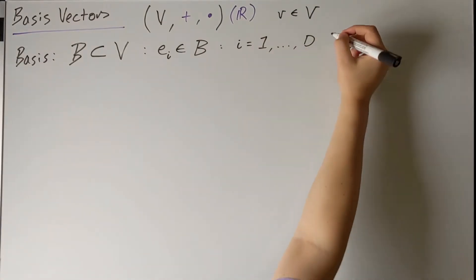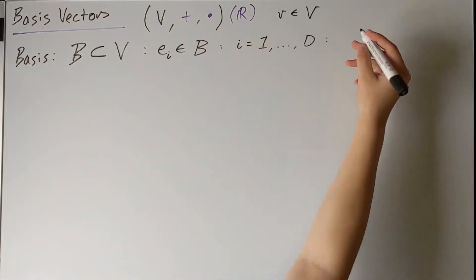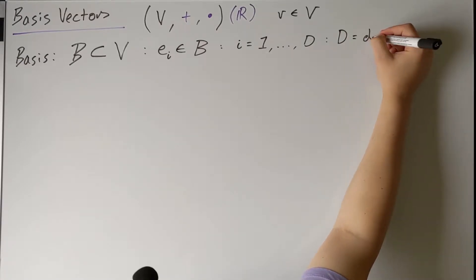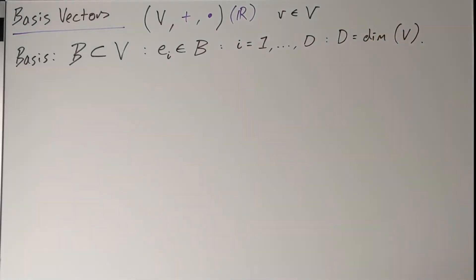Where D is a number which we call the dimension of the vector space, which is usually written dim. Okay, so what's the point of doing this?